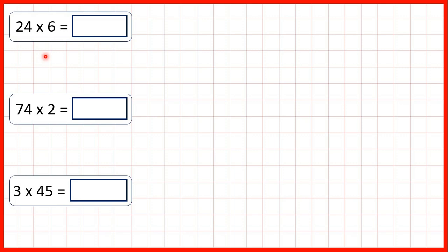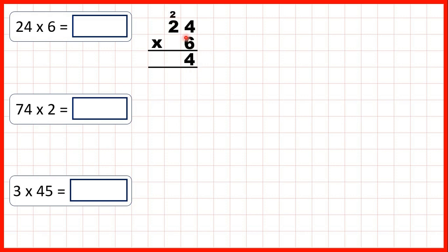We're going to multiply using short multiplication, but this time we're going to get three-digit answers. So first, we have 24 times 6. We can set the question out like this with our two-digit number on top, and because we're using short multiplication, we only need one answer line. Now we start by multiplying our ones digit. 4 times 6 is 24, so we write that as 2 above the next place value column along — above our tens.